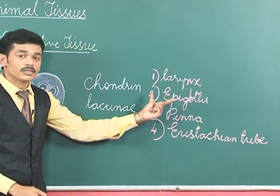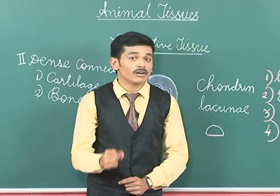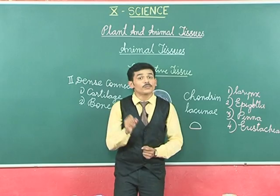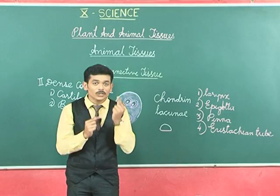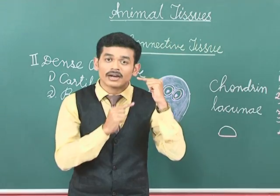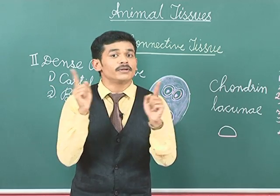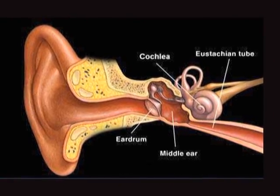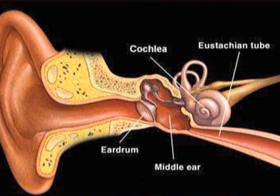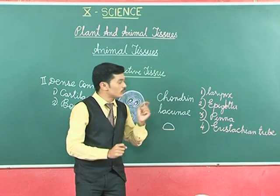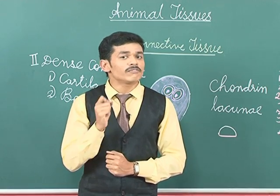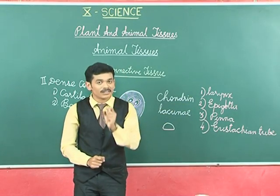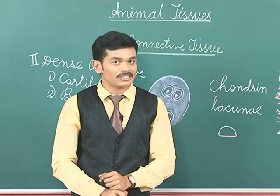The eustachian tube is a tube that connects the middle ear and the pharynx, and it maintains pressure equilibrium in the middle ear. This eustachian tube is made up of elastic cartilage. Elastic cartilage is so named because it predominantly contains elastic fibers in the matrix.